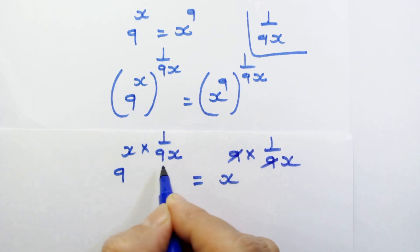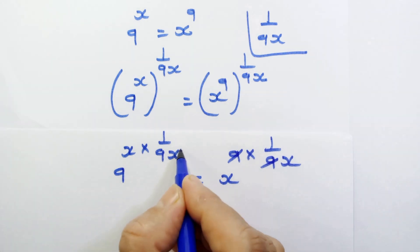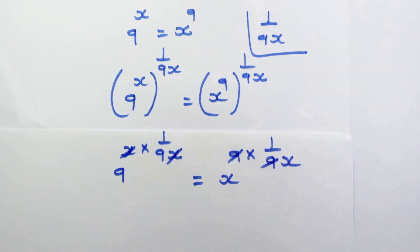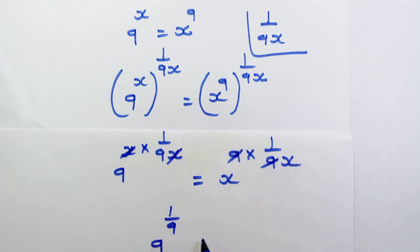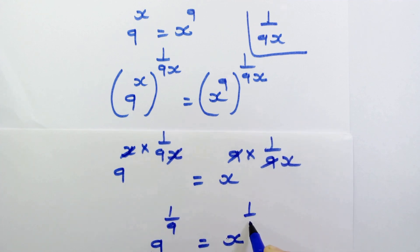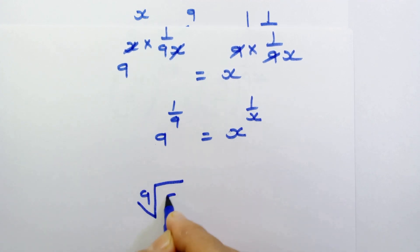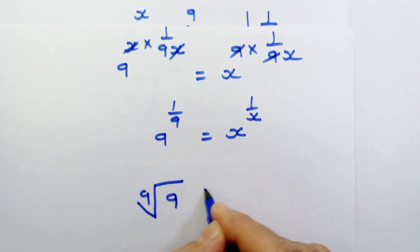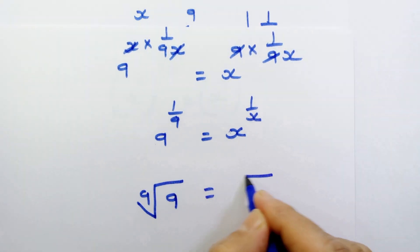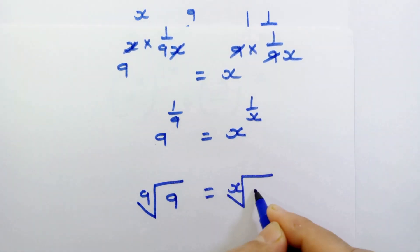The x will be cancelled and the 9 will also be cancelled. So we have 9 raised to 1 upon 9 is equal to x raised to 1 upon x. So here we can write the 9th root of 9 is equal to the xth root of x.